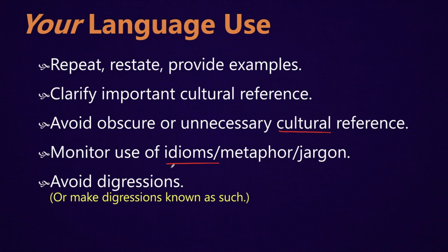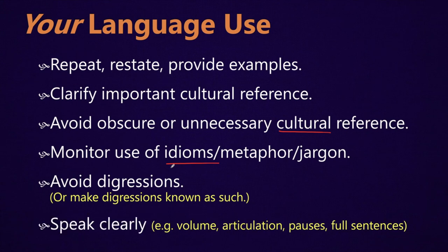Also, try to avoid digressions. Or if you do go into a digression, try to make it known as a digression — just start by saying 'now, this isn't important' or 'this is a little bit off topic,' so that language learners in the class know this doesn't have the same importance as the main topic. And this should go without saying, but just speak clearly. That is, monitor your volume, how you're articulating your words, how you're pausing, and try to use full sentences.